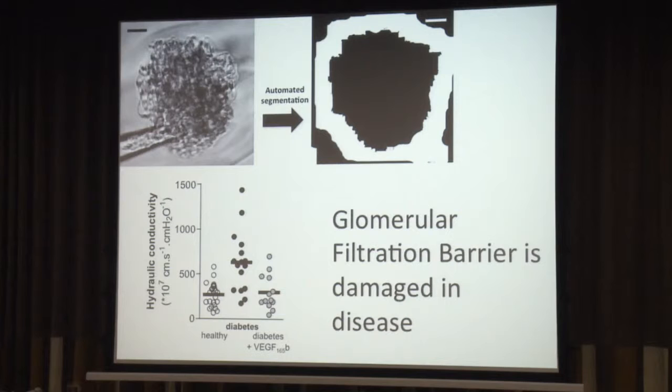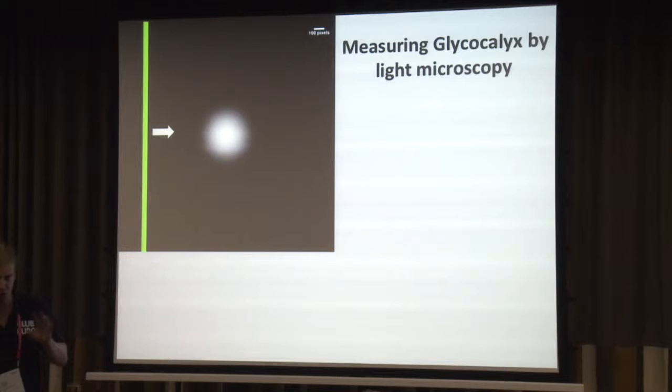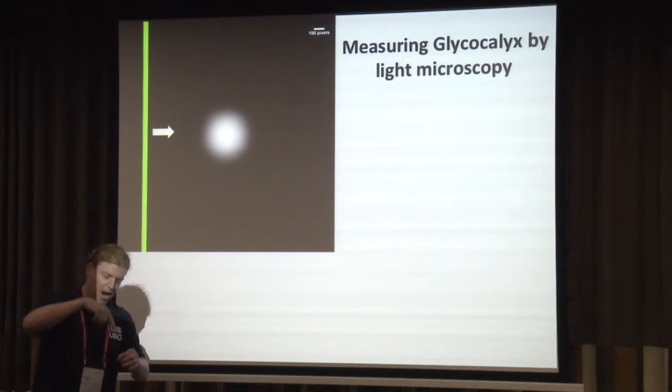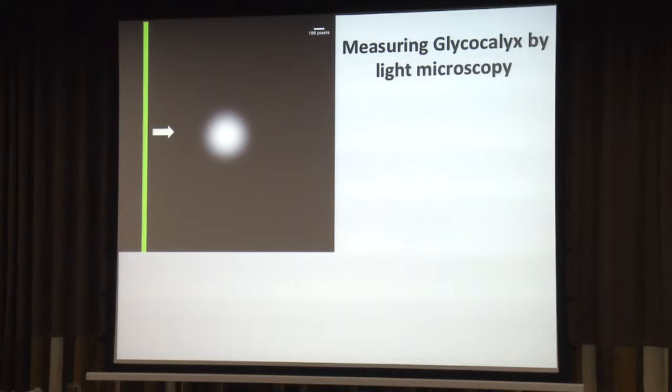The glycocalyx is one of the things we think is responsible. It's a filter on the surface of all blood vessels. Let me look at this: this is a very crude model of a layer of glycocalyx — a perfect layer. It's going to go over an Airy disc, which is the diffraction-limited point from the focal point of our microscope, for a light microscope.